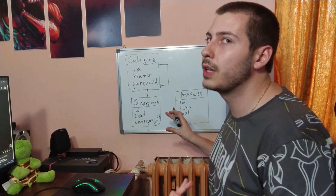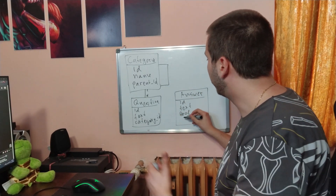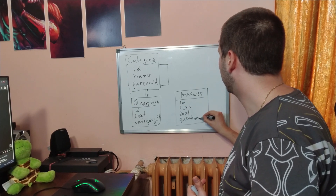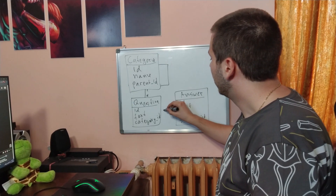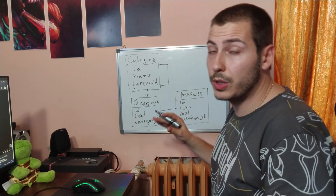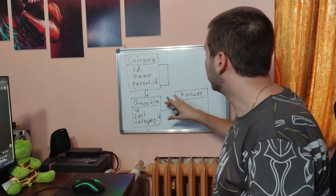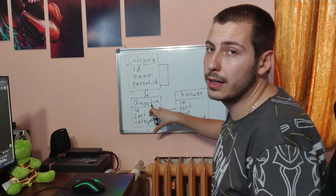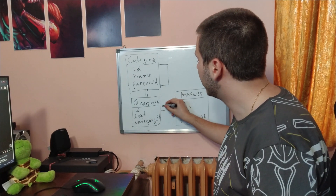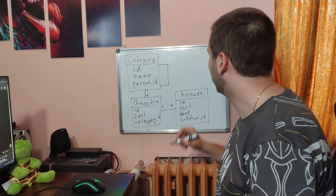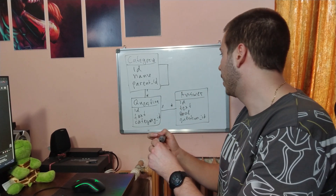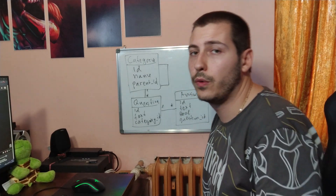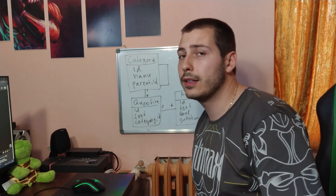The answers table also has a foreign key to the questions table. The connection between the two is: one question can have multiple answers, and one answer can only be connected to one question — which is again one-to-many. Okay, this is the diagram that we are going to follow, so let's try and code it.